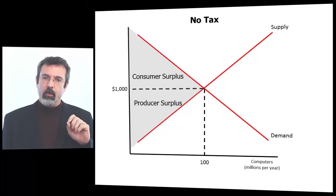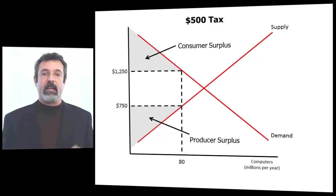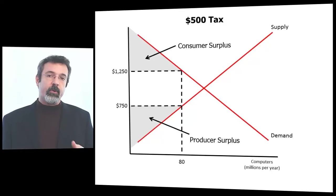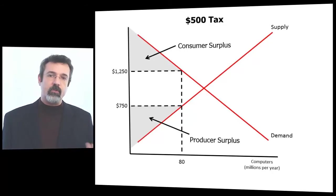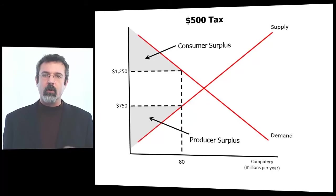Now let's impose the tax. With the tax imposed, the consumer price rises to $1,250, so the consumer surplus is everything above $1,250 and below demand. The producer price falls to $750, so the producer surplus is everything below the price of $750 and above supply. The producer and consumer surplus show the benefits to the consumers and to the producers from exchanging in the market for computers.